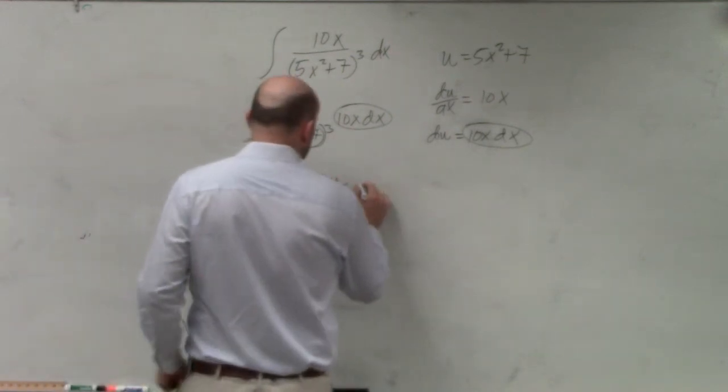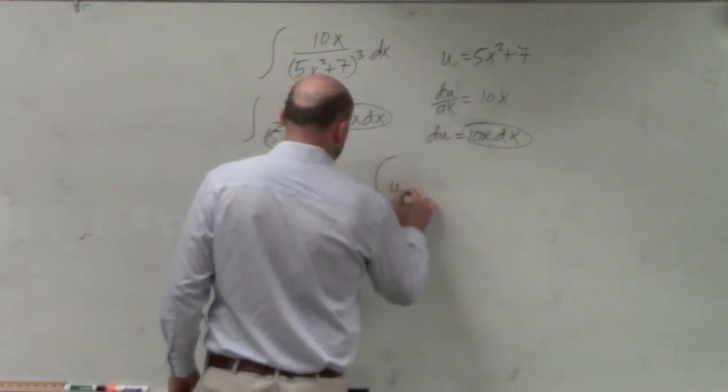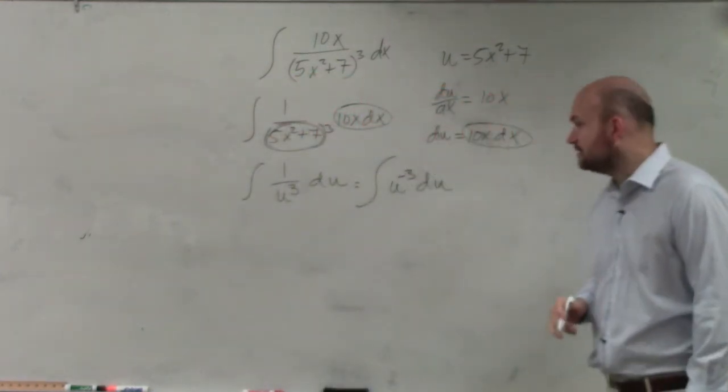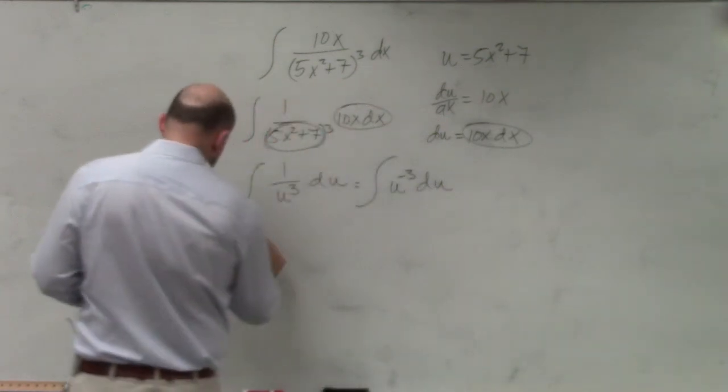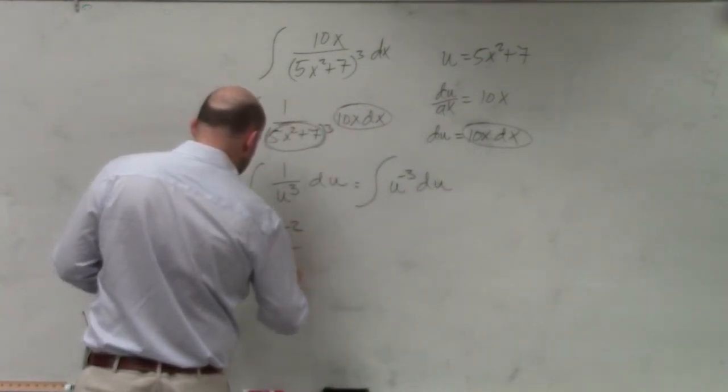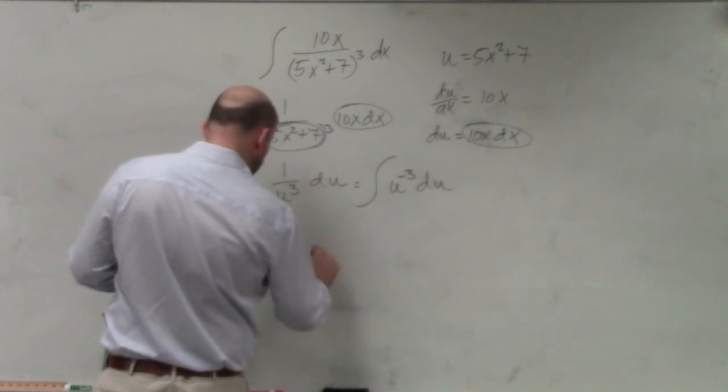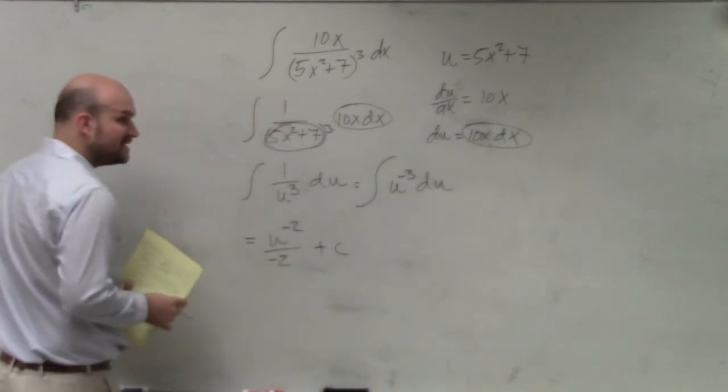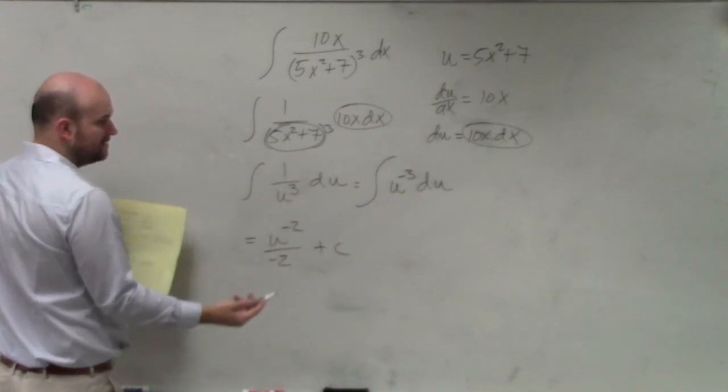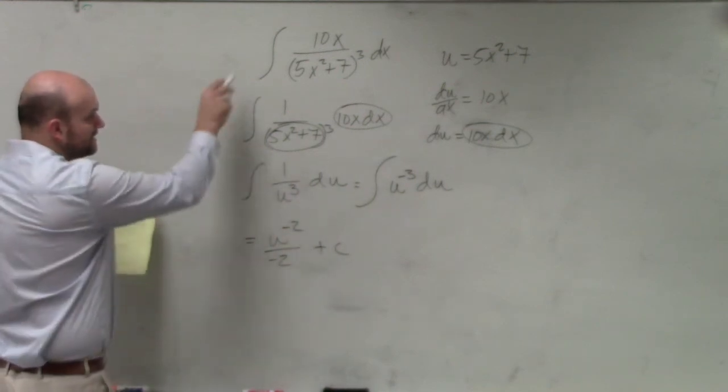And we can integrate that by using a negative power. And when I do that, integrate, I have u to the negative second divided by negative 2 plus c, right? Now I just integrate, add 1, divide by that. And now I can just plug back in my u.